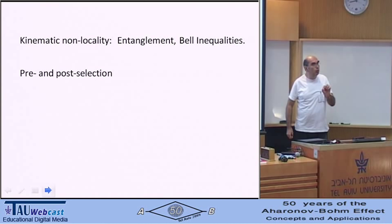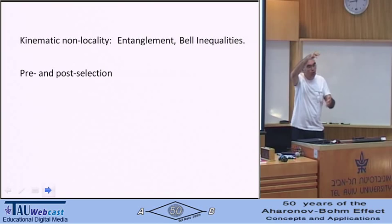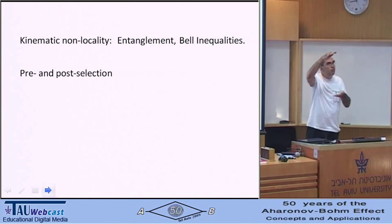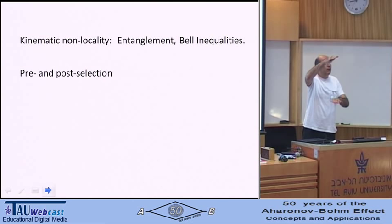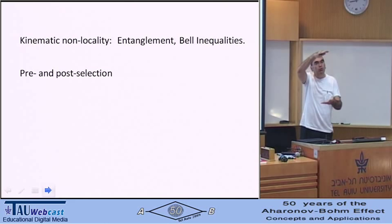because a measurement that you will do in the future, although you know everything that happened in the past, that measurement, you cannot say what outcome will be. You know probabilities, you don't know the outcome, therefore, by seeing the outcome, you put a second time boundary condition.